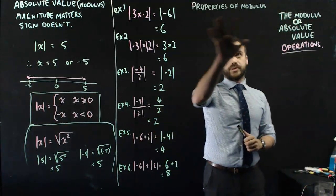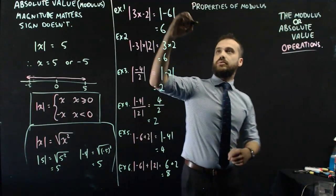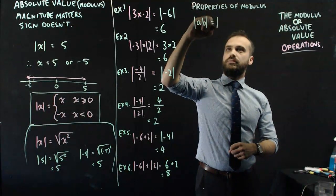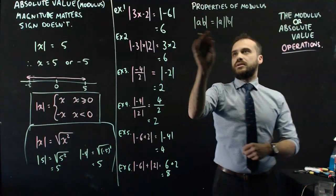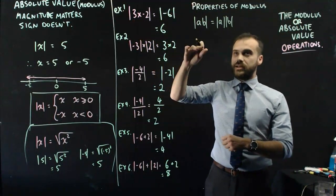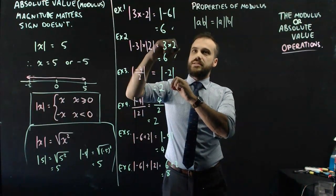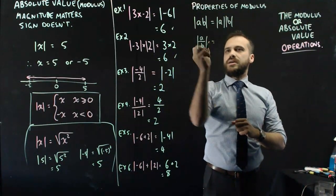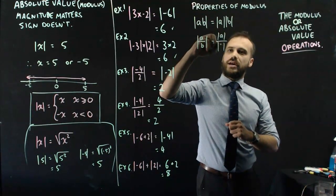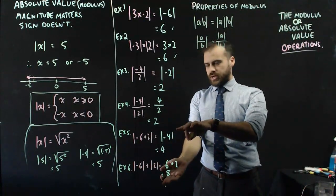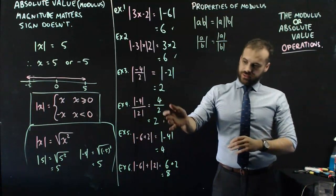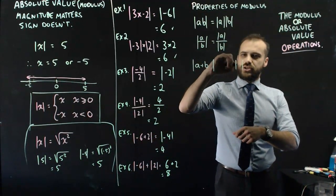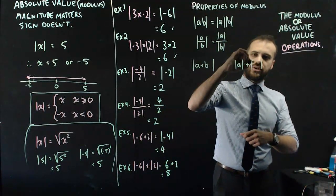Let's recap that — properties of modulus. We can take one property directly from here: the modulus of AB is equal to the modulus of A times the modulus of B. It doesn't matter whether we multiply them together inside or separately, we get the same answer. We get a similar property for division: the modulus of A divided by B is equal to the modulus of A over the modulus of B.